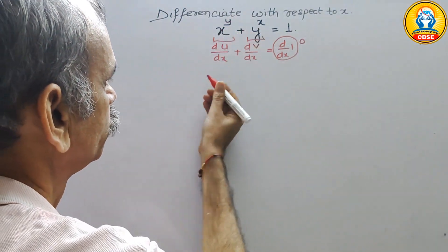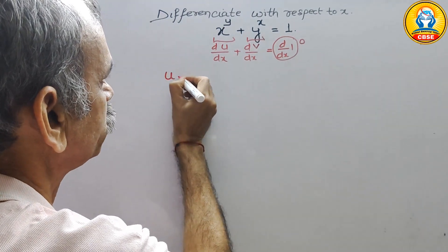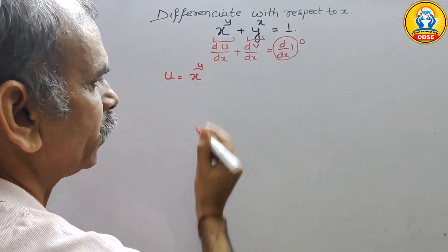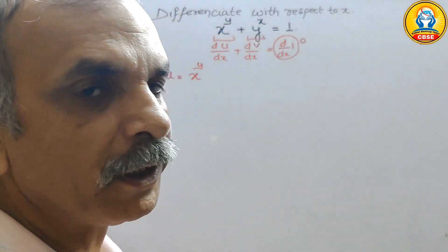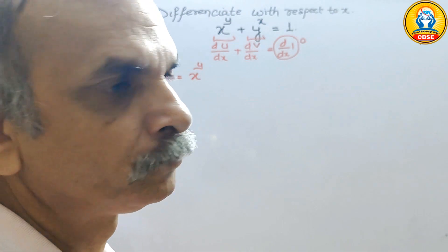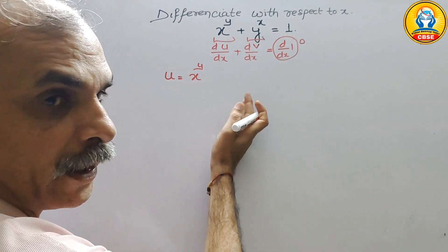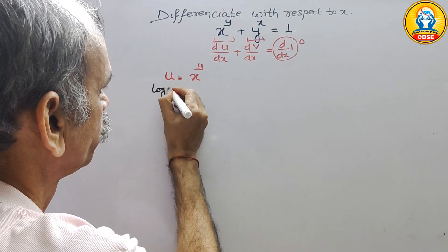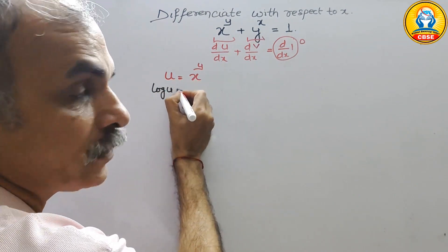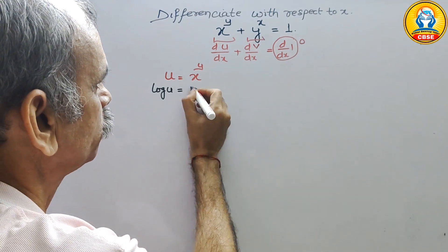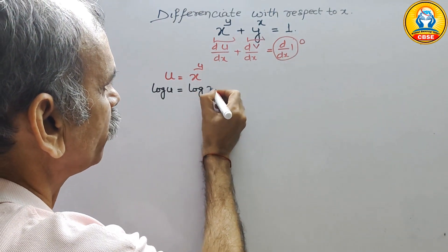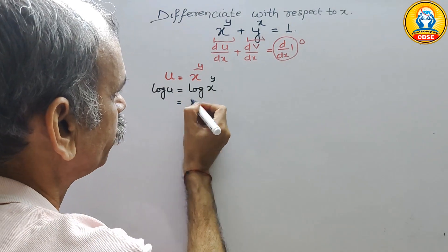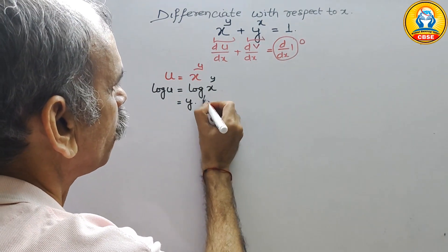First we take u. u is equal to x to the power of y. Now we will take log on both sides. We get log u is equal to log of x to the power of y, which becomes y log x.